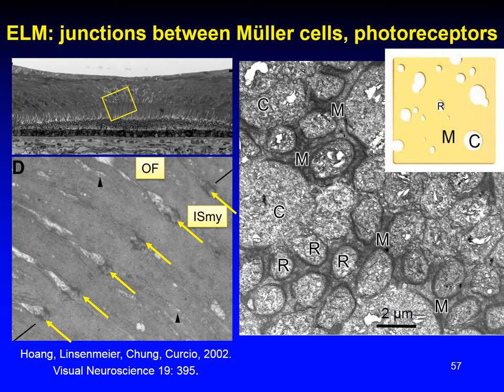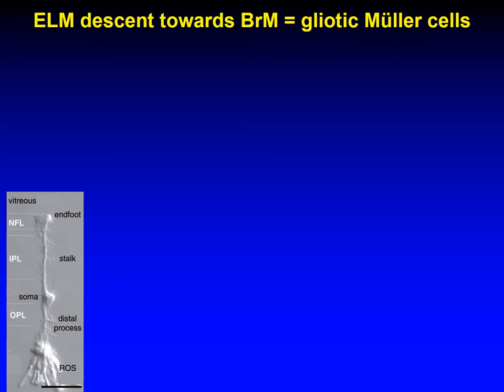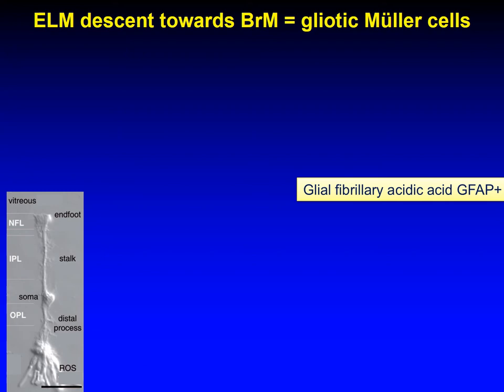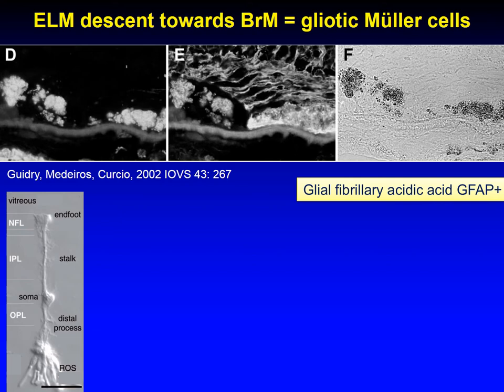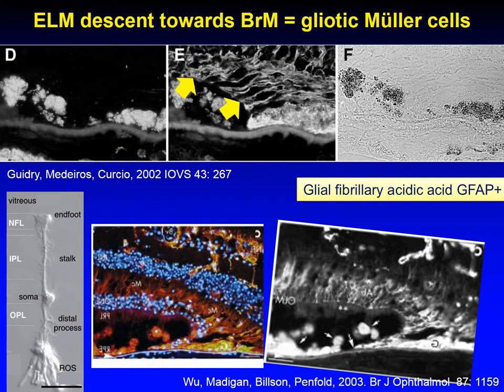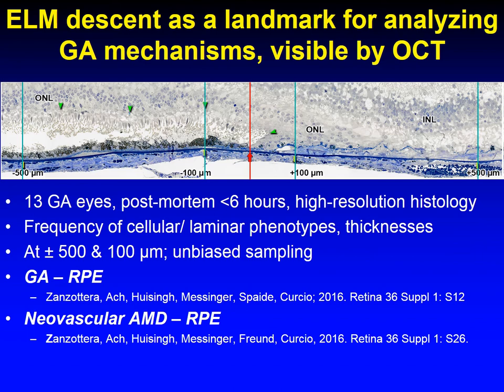What is the ELM? These are junctions between the Mueller cells and the photoreceptors, shown here by electron microscopy. In an en-face view, the Mueller cells form a Swiss cheese pattern and the rods and cones poke through the holes. Mueller cells are usually vertical, or Z-shaped in the macula. Research by our group and Michelle Madigan's group showed that the curved line was GFAP-positive Mueller cells now bent horizontally. We called this landmark the ELM descent, and we used it to analyze the mechanisms of GA visible by OCT.